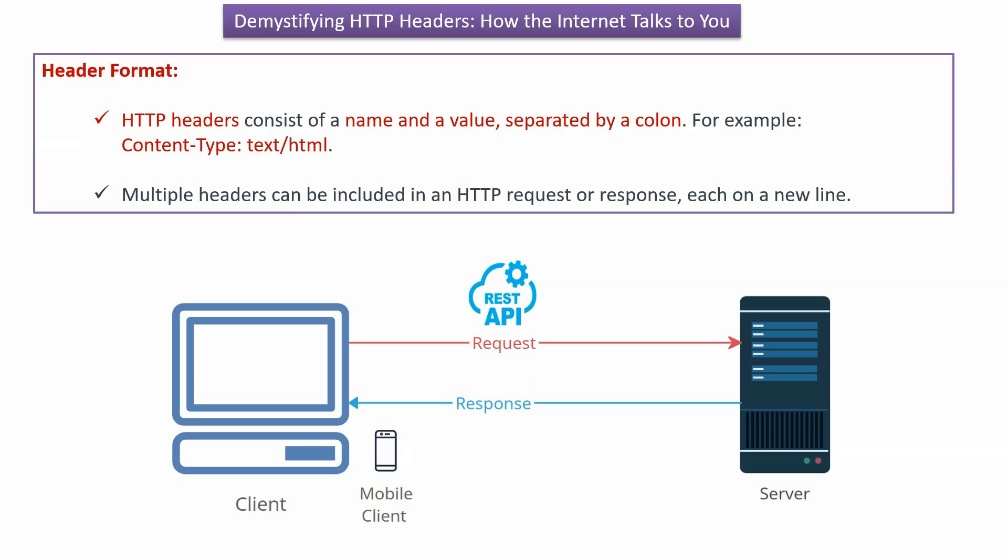Now we will see the format of a header. HTTP headers consist of a name and a value separated by a colon. For example, the name is content-type, the value is text/html, and they are separated by a colon. Multiple headers can be included in an HTTP request or response, and each header is separated by a new line.